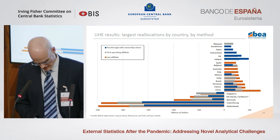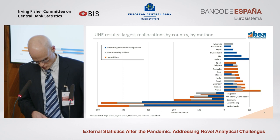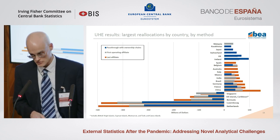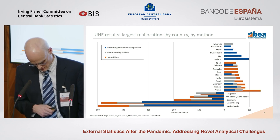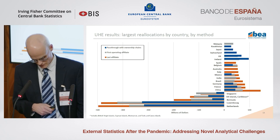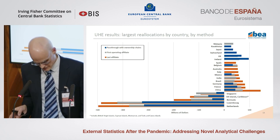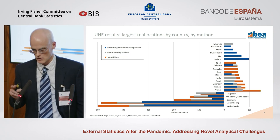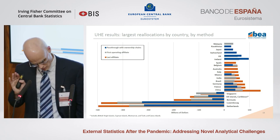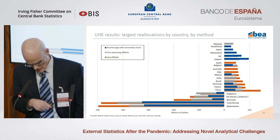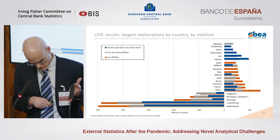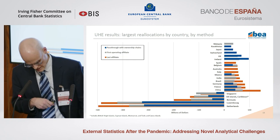This slide adds the results of the last affiliate method in orange — these are the entities at the bottom of U.S. multinationals' ownership chains. In all three methods, the five largest negative reallocations are the same: Luxembourg, Netherlands, Bermuda, UK islands in the Caribbean, and Singapore. It's important to note that while countries with advantageous tax and regulatory regimes do have position reallocated away from them, they do not go to zero in any of the methods explored.